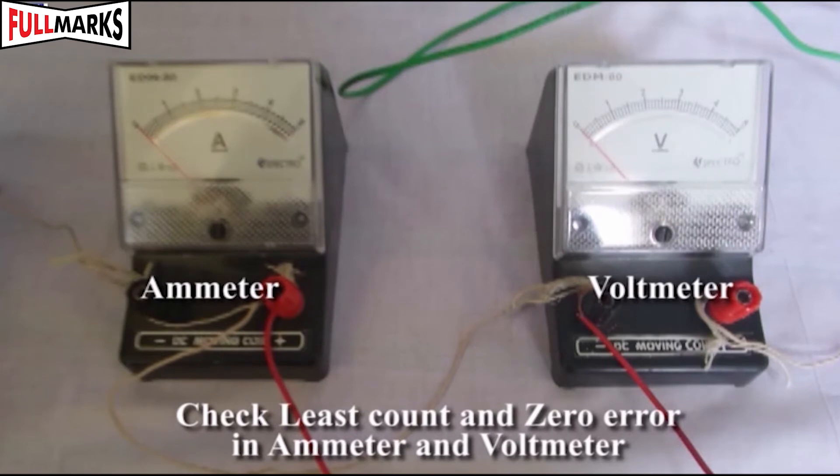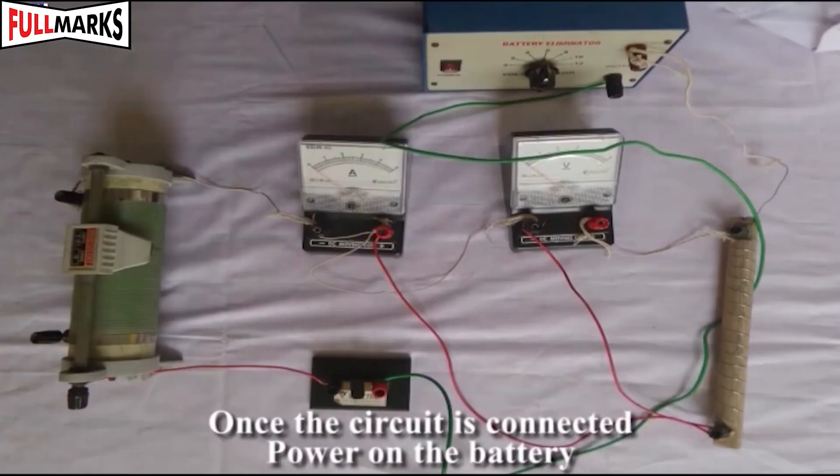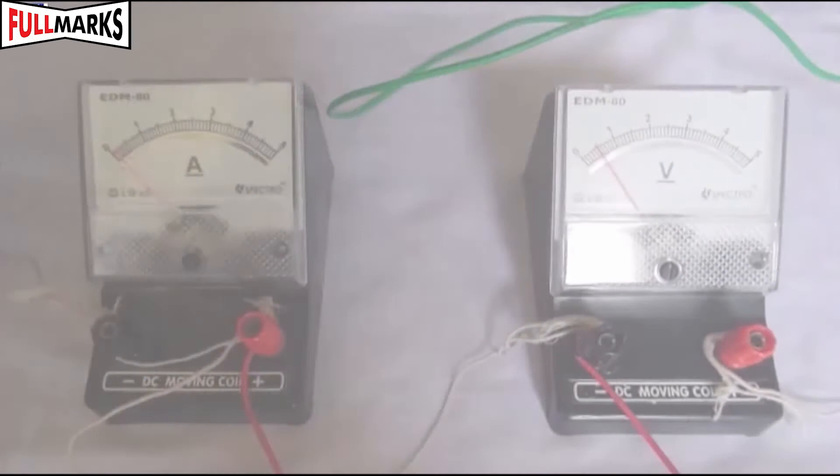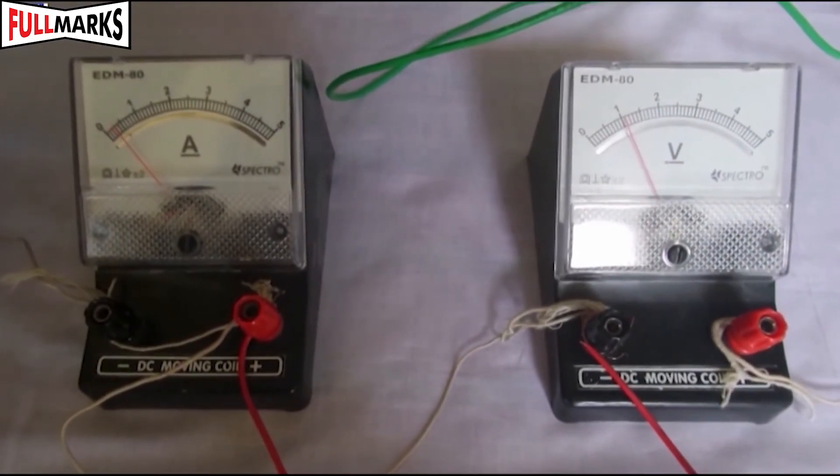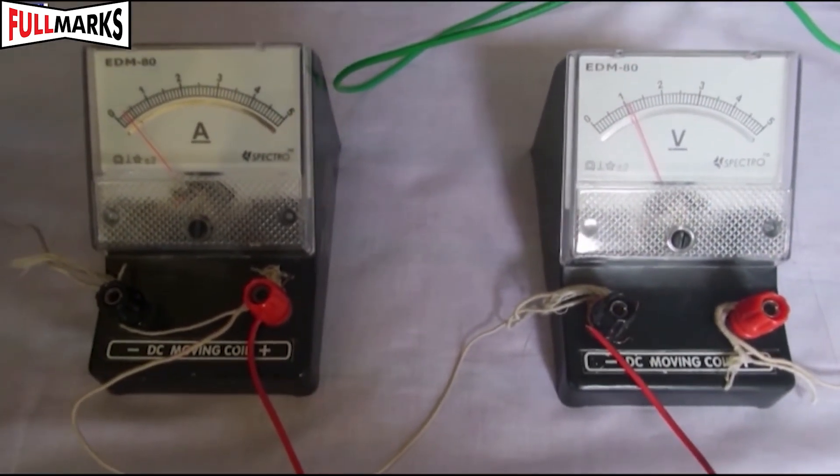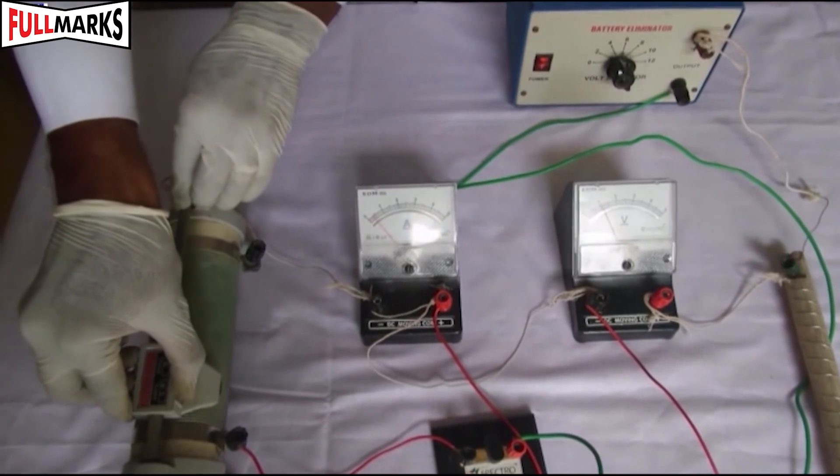Once the circuit is connected, insert the key and check the rheostat. Adjust its slider and see whether the ammeter and voltmeter readings are shown. By using the slider of the rheostat, take three different readings of current and voltmeter.